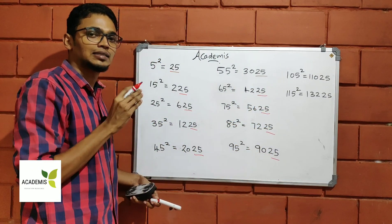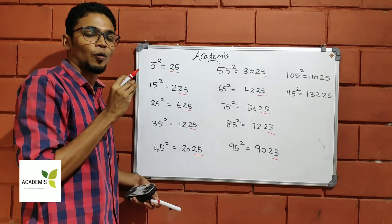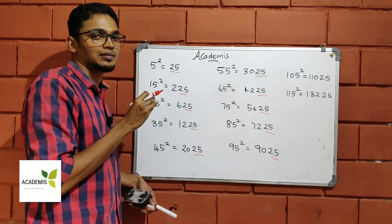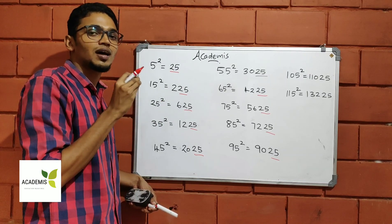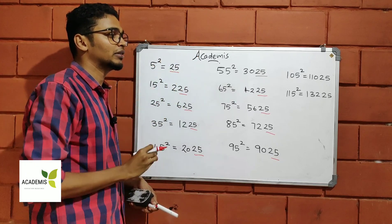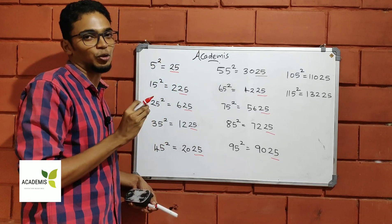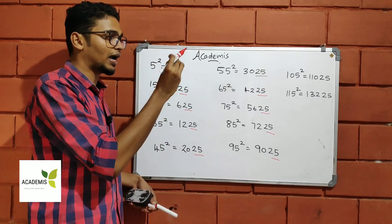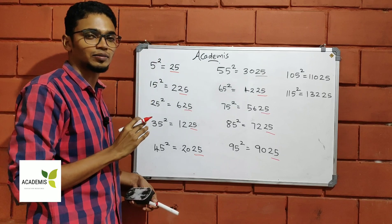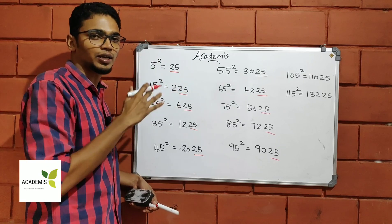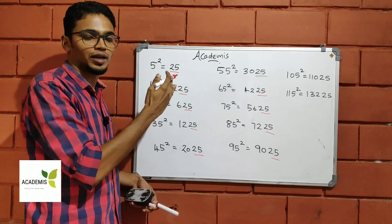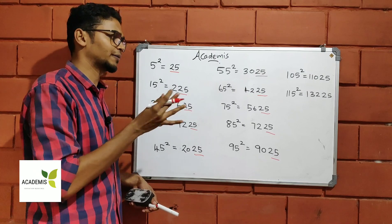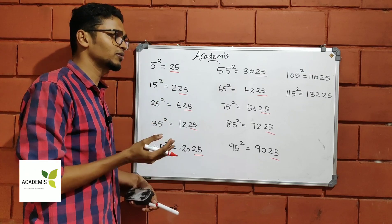The answer always has two digits. The answer has a last part and a first part. This is the first part, and this is the last part.